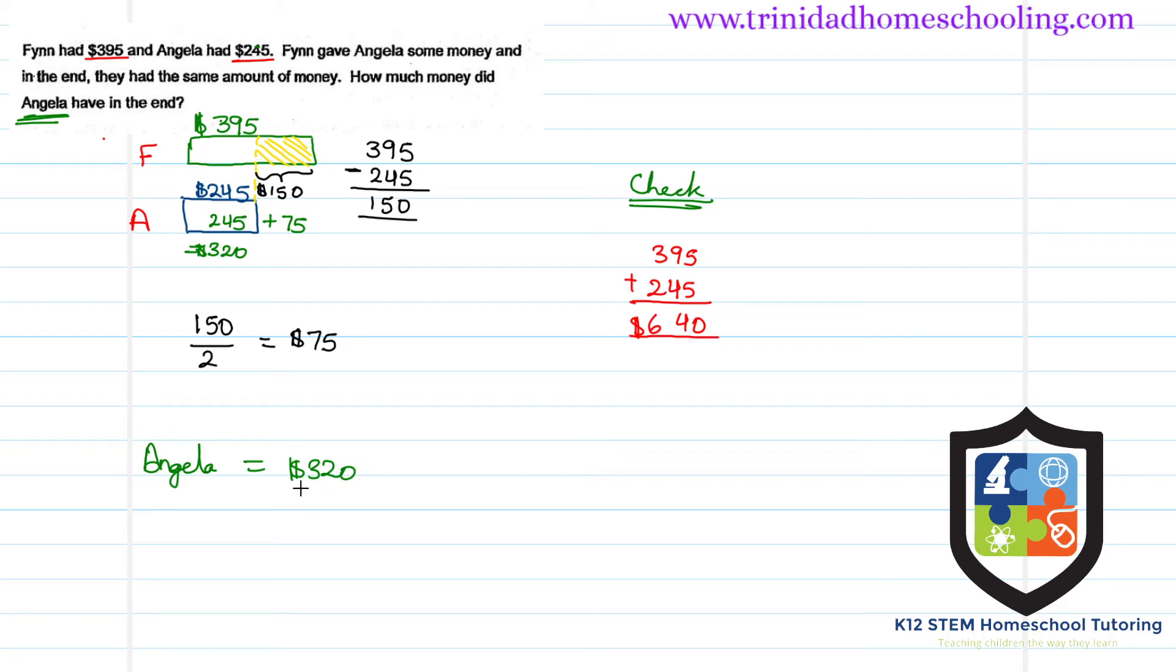Now let's add Angela's piece to what Finn would have. Since you split the extra piece equally between the two, it means that Finn also has this $245 plus that little extra, which was half of this, $75. So again, $245 plus $75 will give us $320. So Finn now has $320, Angela now has $320.